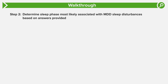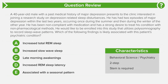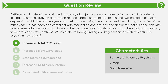Step two: we need to determine which sleep phase is most likely associated with major depressive disorder sleep disturbances. Looking at our answer choices, patients with major depressive disorder have increased total REM sleep. That makes answer choice A — increased total REM sleep — the correct answer.